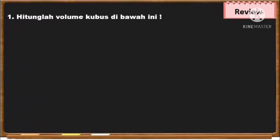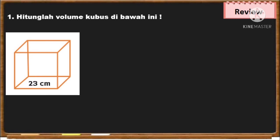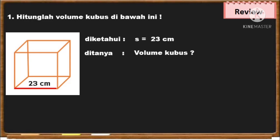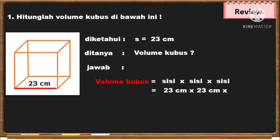Untuk review soal yang pertama: hitunglah volume kubus di bawah ini. Di sini sudah ada gambar kubus. Diketahui sisinya adalah 23 cm. Ditanya volume kubusnya. Berarti volumenya adalah sisi dikali sisi dikali sisi. Kita masukkan sisinya: 23 cm × 23 cm × 23 cm. Pertama, kita kalikan dua sisi dulu, hasilnya 529 cm persegi.